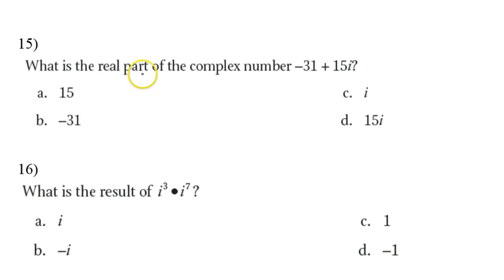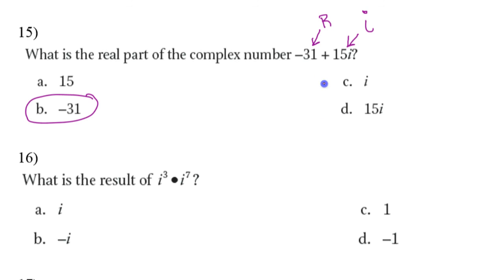Number 15, what is the real part of this complex number? Well, you've got the, this is the real part right here. And this is the imaginary part right here. So the real part is simply negative 31. Nothing really to that. The a is the real part. And when we're talking about a plus bi, the a is the real part. And the bi is the imaginary part.